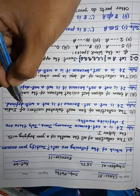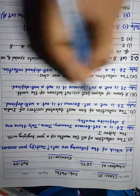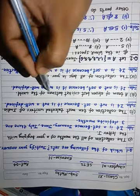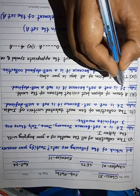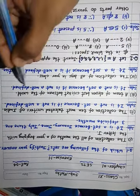Well-definition is must for being a set. Third, a team of 11 best cricket batsmen of the world. Solution, it is not a set because it is not well-defined.